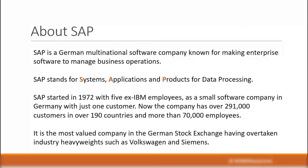SAP is the most popular business application software in the world. It is a German company known for making enterprise software to manage business operations. The letters SAP stand for Systems, Applications and Products for data processing. It started way back in 1972 with 5 ex-IBM employees as a small software company in Germany with just one customer. Now after four decades, the company has grown to over 291,000 customers in over 190 countries with more than 70,000 employees.